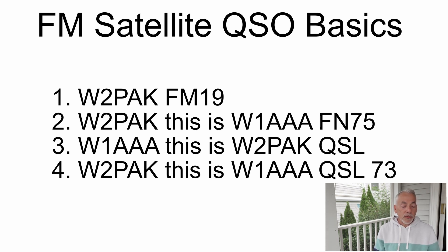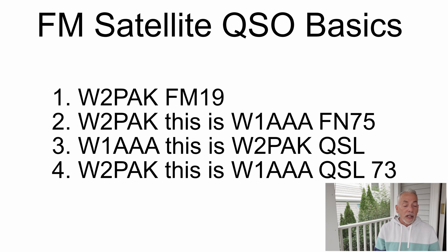I would answer in return: Whiskey 1, Alpha Alpha Alpha, this is Whiskey 2, Papa Alpha Kilo, QSL — basically acknowledging I heard them come back to me. And finally the other station would say: Whiskey 2, Papa Alpha Kilo, this is Whiskey 1, Alpha Alpha Alpha, QSL 73. And that is the end of the QSO. There are a lot of people on these satellites, so we want to make it very, very short. Also, I open the squelch on my transceiver — these signals are fairly low and don't always break through the squelch.